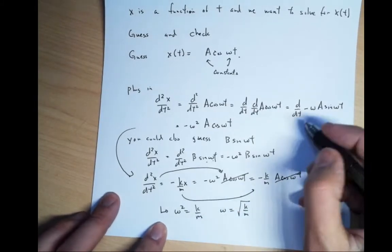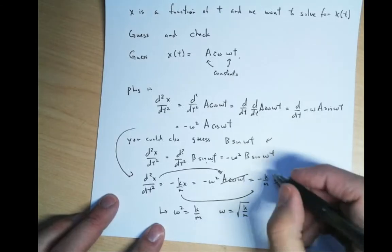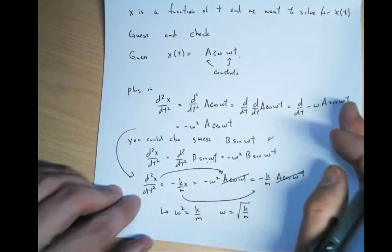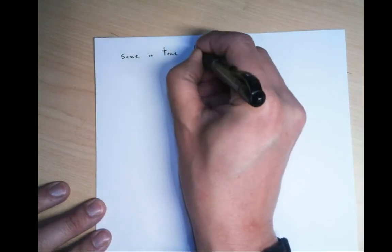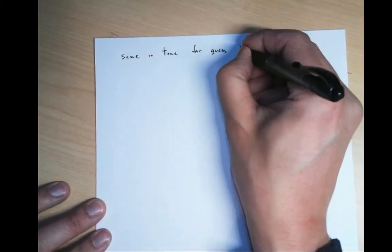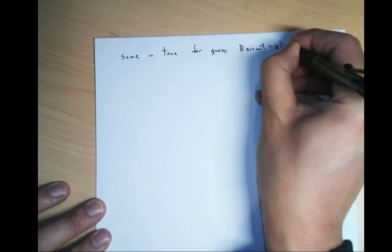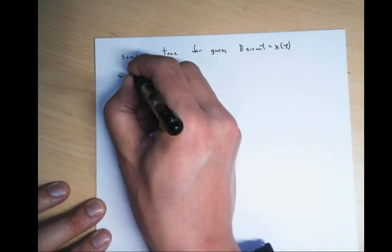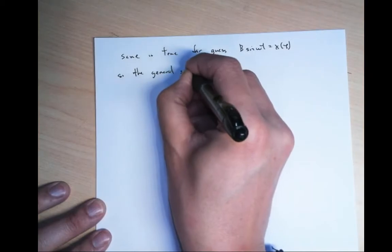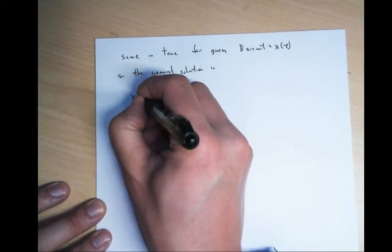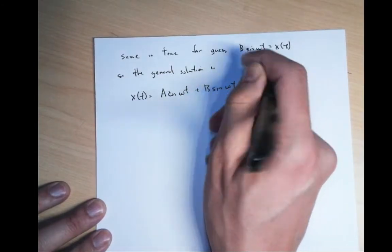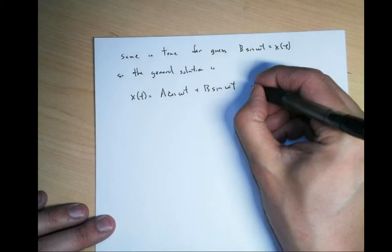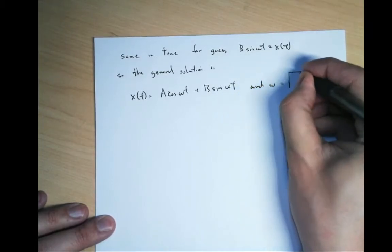That means the guess works if omega equals the square root of k over m. If you had guessed B sine omega t, you would get the same result. So the general solution is x of t equals A cosine omega t plus B sine omega t, where omega equals the square root of k over m.